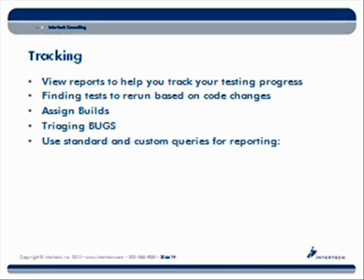Next we're going to look at what the tool provides for tracking — what user stories don't have test cases, what test cases have been run, how many tests are passing or failing, how to prioritize bugs, assigning which builds you want your test plan to run against, and some of the query capabilities of the tool.